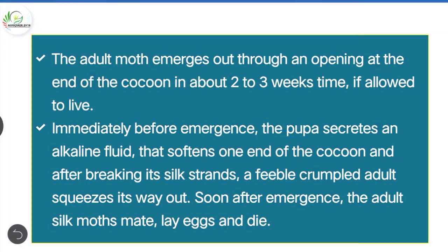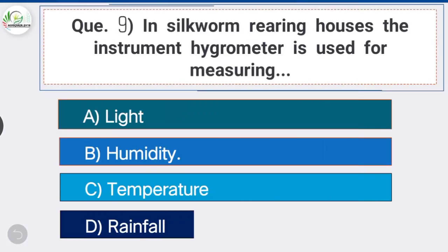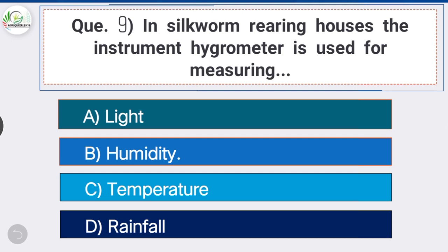Question number nine: in silkworm rearing houses, the instrument hygrometer is used for measuring — option B is the correct answer — humidity. During silkworm egg incubation it is important that humidity be maintained at 80 percent on average for normal growth of the embryo.